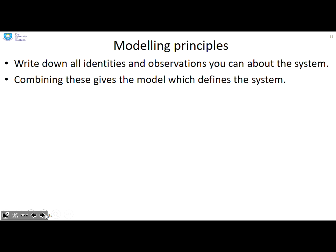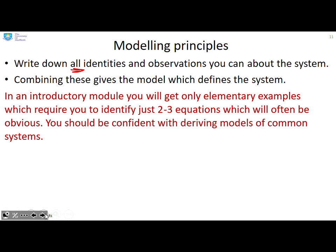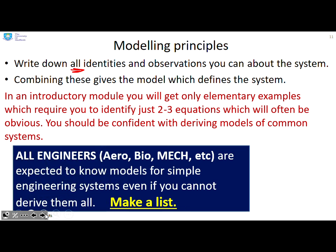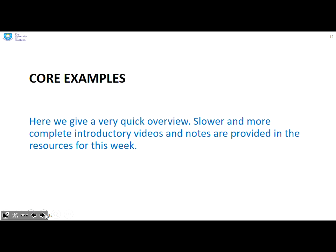Modelling principles, what do we need to do? Write down all the identities and observations you can about the system. The key word here is all. Combining these gives the model which defines the system. In an introductory module, you will only get elementary examples which require you to identify just two to three equations, which will often be obvious. You should be confident with deriving models of common systems. Here's the key thing. All engineers, it doesn't matter what discipline you are, all engineers are expected to know models for simple engineering systems, even if you can't derive them all. I would recommend you make a list and keep it in your book somewhere in your notes. What we're going to do now is give a few core examples. This is going to be done very quickly because clearly, if you want slower and more complete introductions, that's in the notes and resources for this week, which is obviously where we're encouraging you to go.